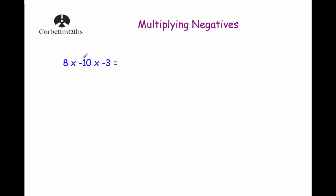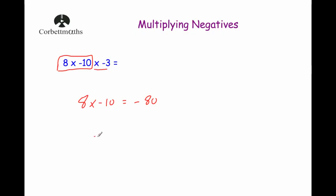Our next example is 8 multiplied by negative 10 multiplied by negative 3. With three numbers, we multiply the first two together first. 8 multiplied by negative 10: positive times negative gives a negative, and 8 times 10 is 80, so that's negative 80. Now we do negative 80 multiplied by negative 3: negative times negative is positive, and 80 times 3 is 240. So our final answer is 240.